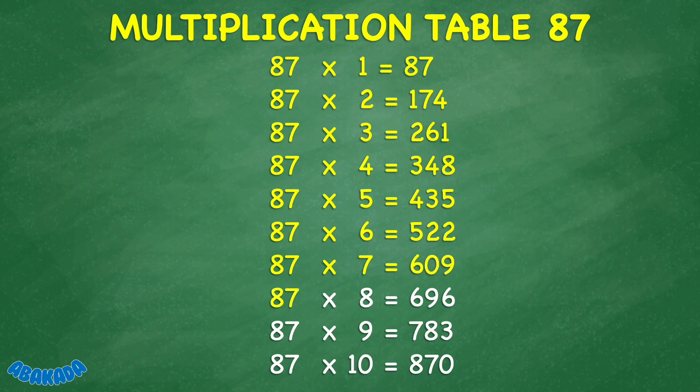87 times 8 equals 696. 87 times 9 equals 783. 87 times 10 equals 870.